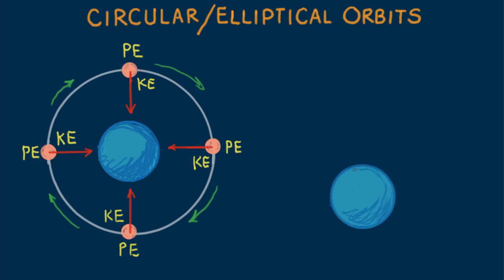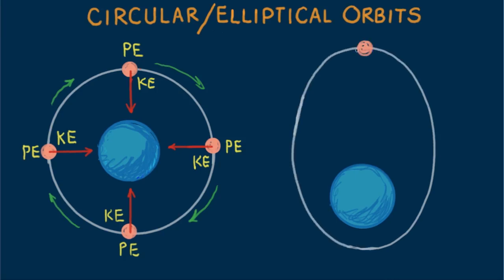Now things are different for a satellite in an elliptical orbit. Consider these sample positions for such a satellite. Since the distances from Earth are different, the forces are different. Weak are far from Earth and stronger when closer, in accord with the inverse square law. So the speeds are different also.